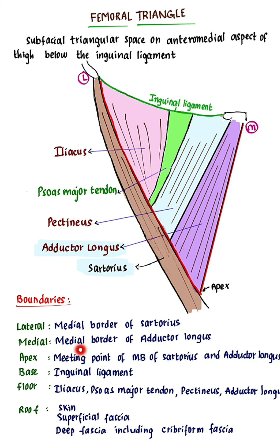Medially, the boundary is formed by the medial border of adductor longus. This is adductor longus. The apex is formed by the meeting point of the medial border of sartorius and the medial border of adductor longus.